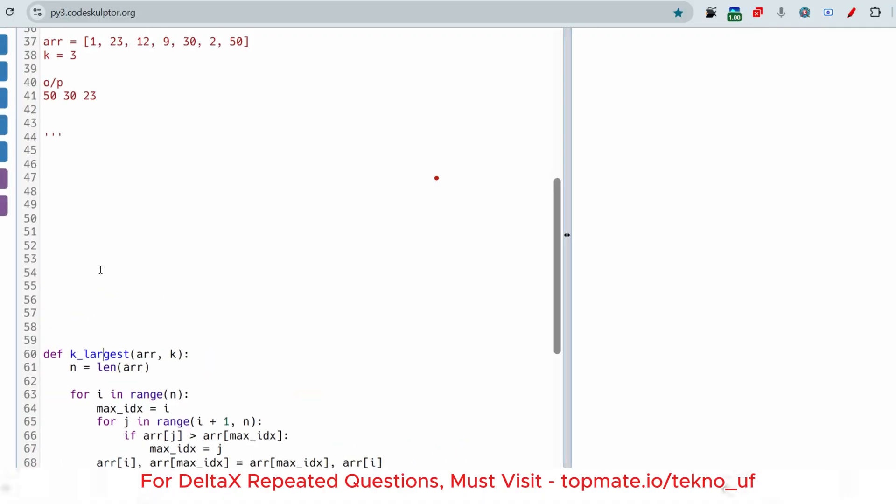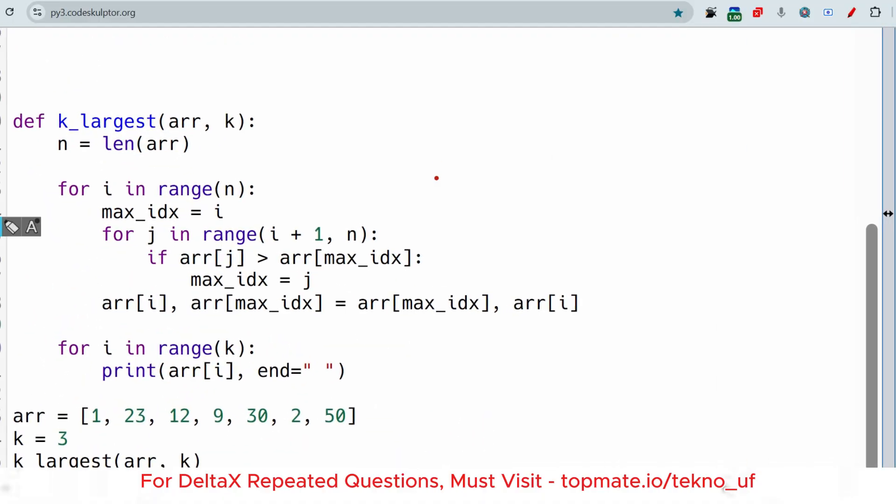This is the array: 1, 23, 12, 9, 30, 2, and 50. The indexes are 0, 1, 2, 3, 4, 5, 6. Now at first we are running a for loop to go through all the elements. The first variable max_idx is storing first index zero.